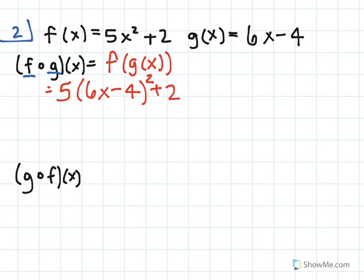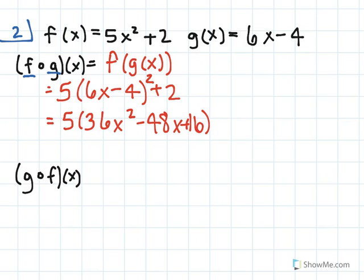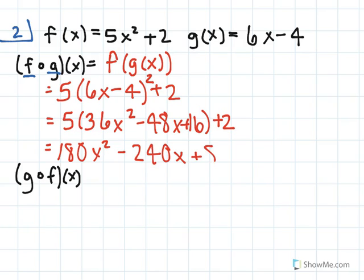We can use FOIL to simplify 6x minus 4, and we're going to end up with 5 times 36x squared minus 48x plus 16, plus 2. If we simplify that all the way, we'll end up with 180x squared minus 240x plus 82.